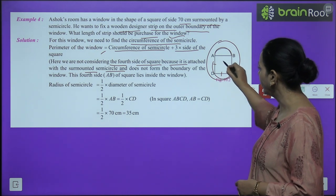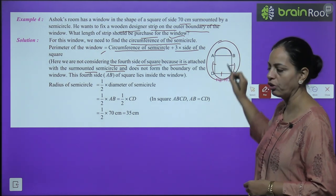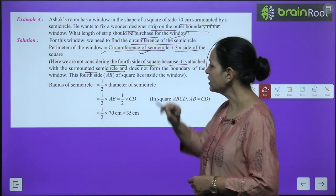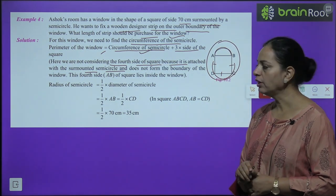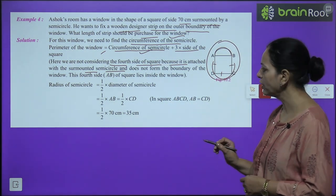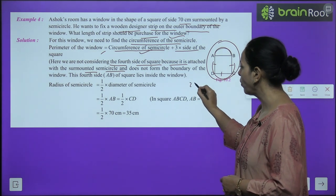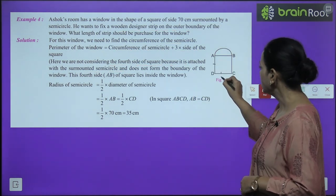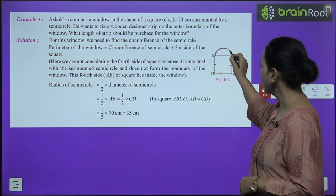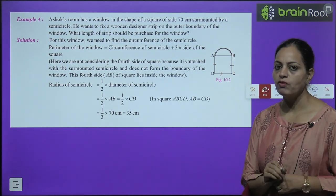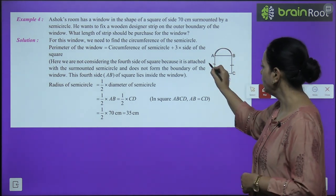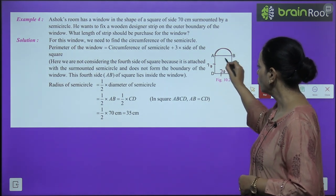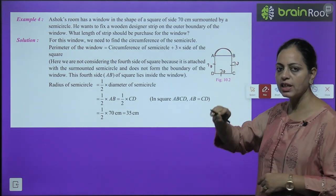Perimeter of window = circumference of semicircle + 3 sides of square. Each side is 70 cm. Radius of semicircle = 35 cm (half of 70). Circumference of semicircle = π × r = (22/7) × 35 = 110 cm.